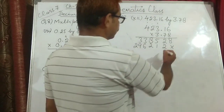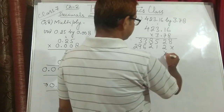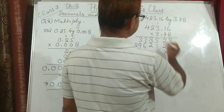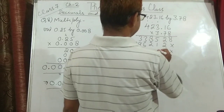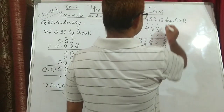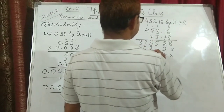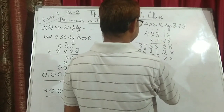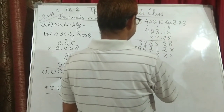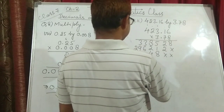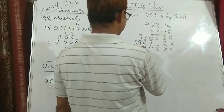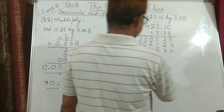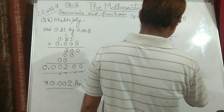Now we multiply by 7: 423.16 into 7. And then we multiply by 3: 423.16 into 3. We carry out the simple multiplication row by row.